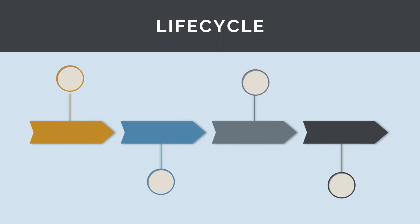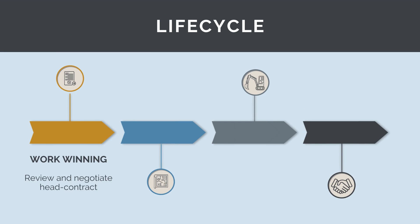As with all the other construction management skills, procurement and contract management is used across the life cycle of a construction project. In the work winning phase, we will review and negotiate the head contract with our client. We will also begin some procurement activities as part of developing the delivery methodology and estimate for the schedule.